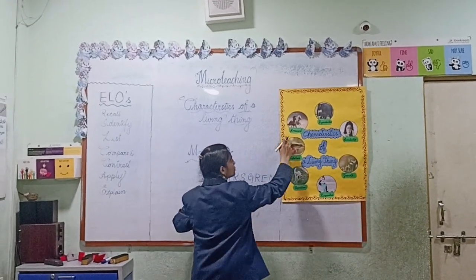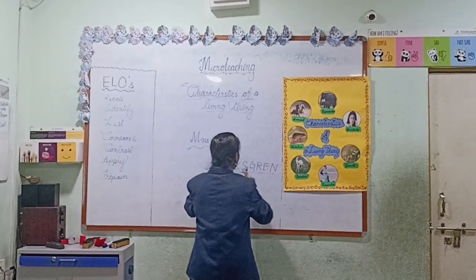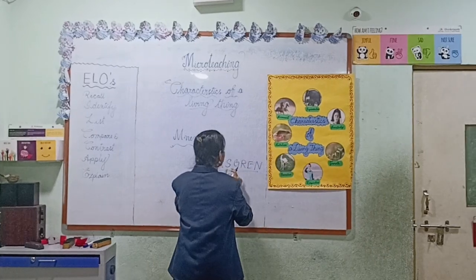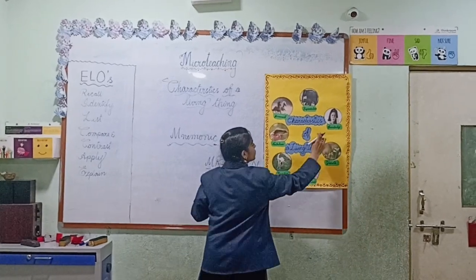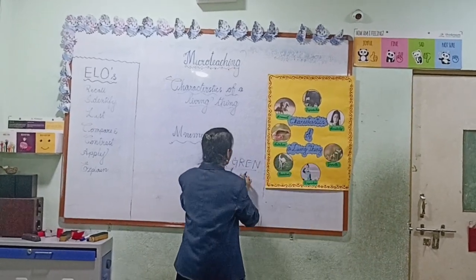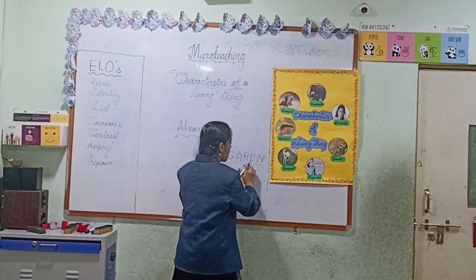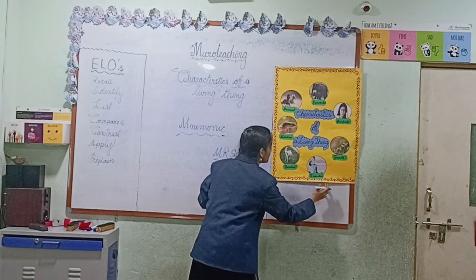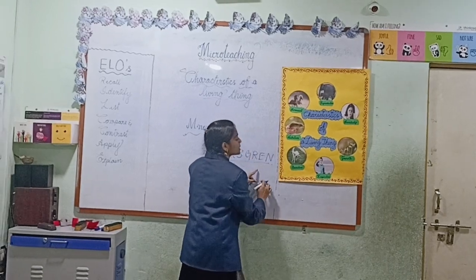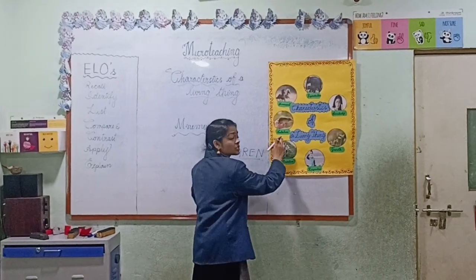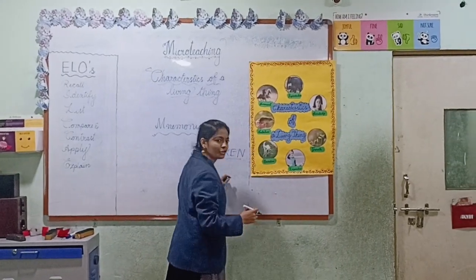M stands for Movement. R stands for Reproduction. S stands for Sensitivity. G stands for Growth. R stands for Respiration. E stands for Excretion. And N stands for Nutrition.